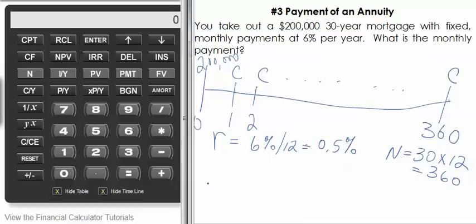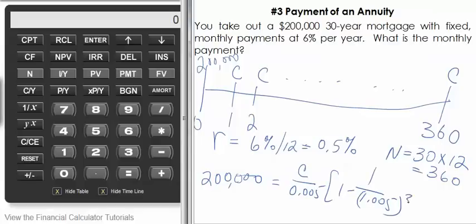When we're solving for the payment, we're finding the solution to this present value of an annuity formula. You can isolate the C in this formula and then just plug all your numbers into the calculator, or you can take advantage of your time value of money function on your financial calculator.